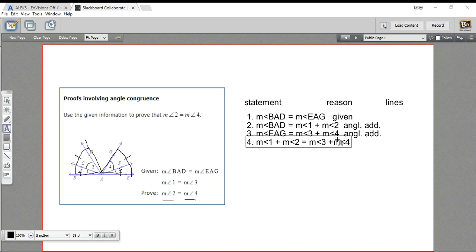So I'm going to say the measure of angle 1 plus the measure of angle 2 equals the measure of angle 3 plus the measure of angle 4. This is substitution. I'm using all three of those previous lines, so the lines are 1, 2, and 3.